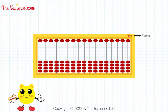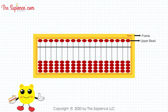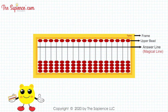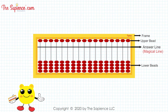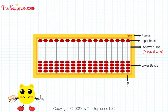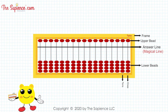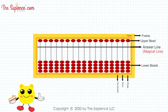This is the frame. These are the upper beads. This is the answer line, which is a magical line. These are the lower beads. This is the ones column. This is the tens column. This is the hundreds column. This is the thousands column.